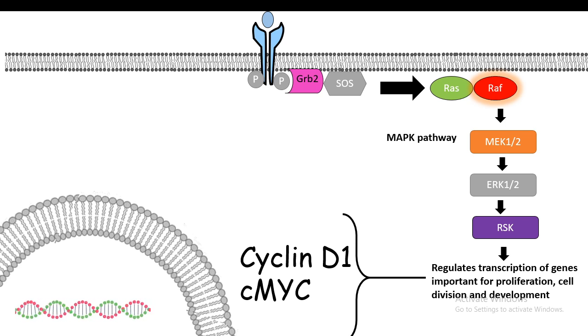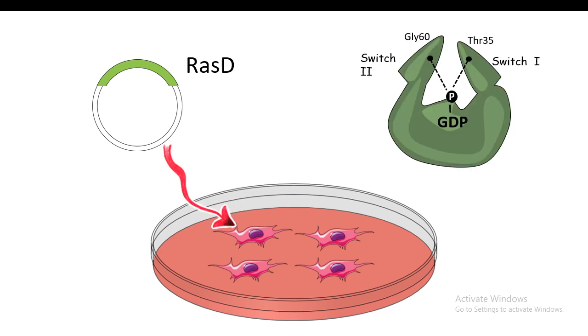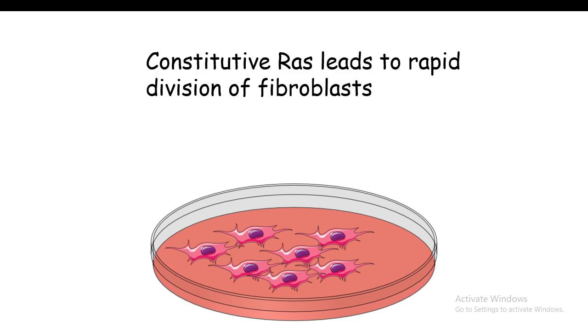It has been seen that Ras can induce cell division in cell lines which do not divide, such as fibroblasts, which divide seldom. Once you have a constitutively active version of Ras, which is always active and cannot hydrolyze GTP, if you transfect cell lines with this kind of Ras, these cell lines start dividing rapidly, which is unusual for a fibroblast. This means Ras can ultimately lead to cell division